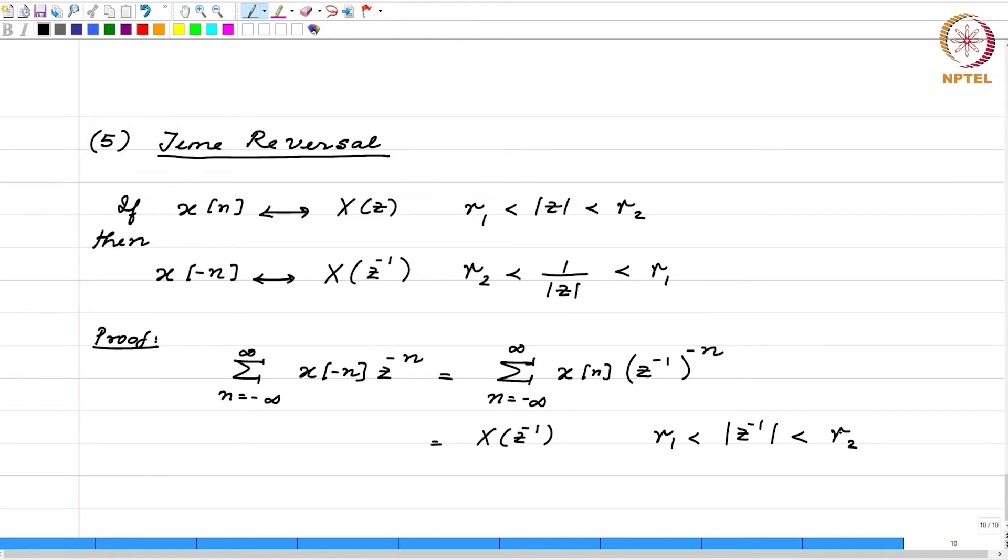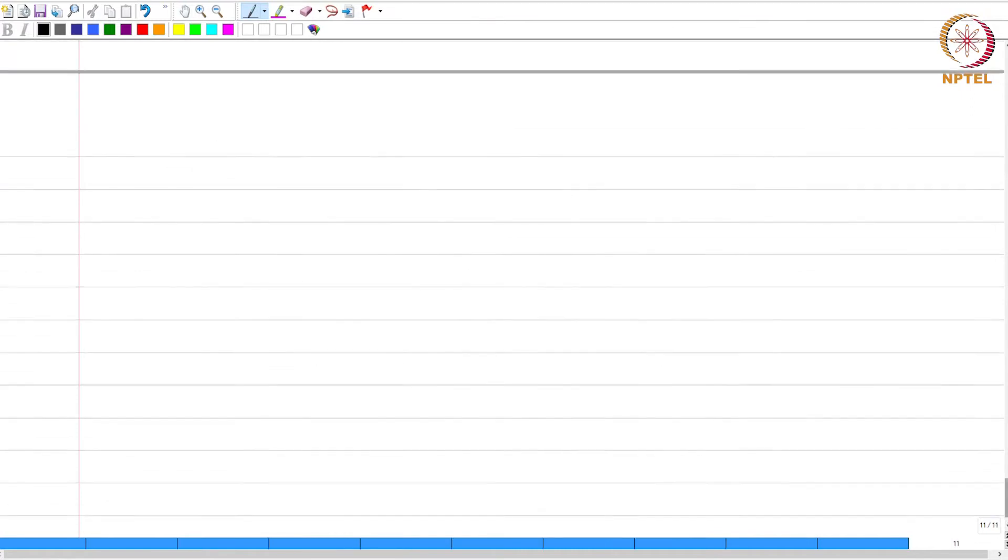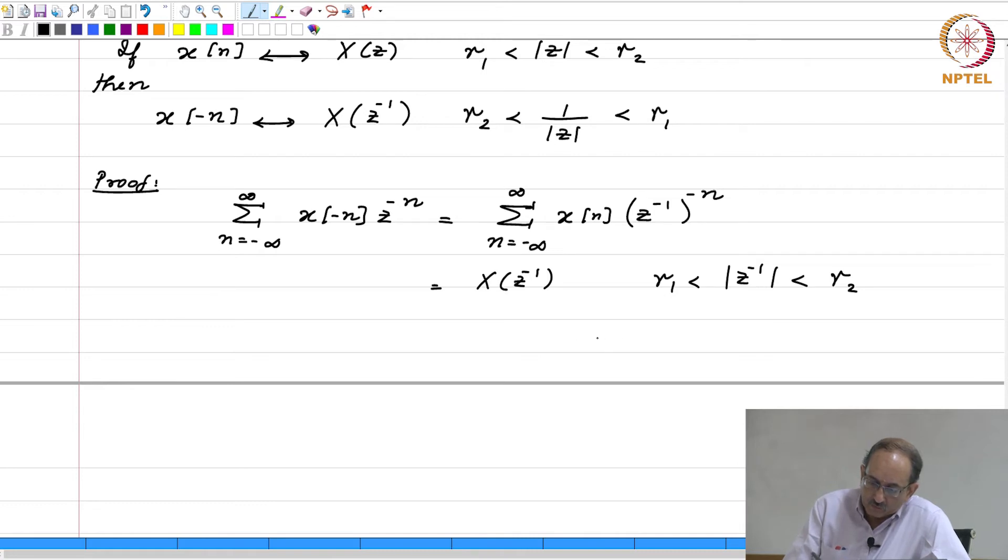Let me see if I got that right. We can see whether I made an error there. If you look at this, this is r 1 less than 1 by mod z, correct. Therefore, this implies mod z less than 1 by r 1. I should have this as... So, this is what you meant? Yeah. This should be 1 by r 2, correct? 1 by r 1. Did I get it right now? Yeah, thank you.